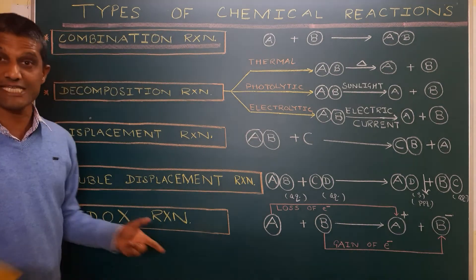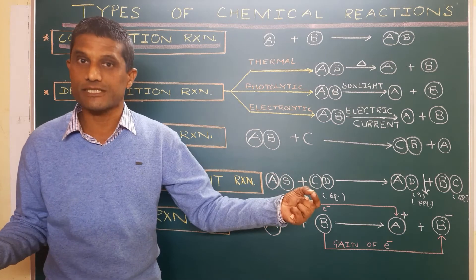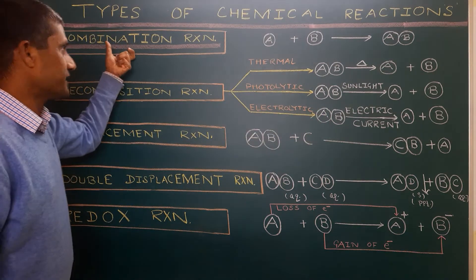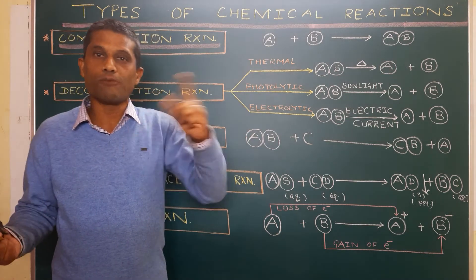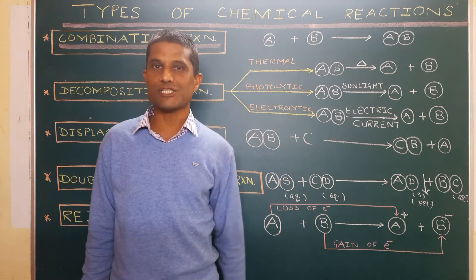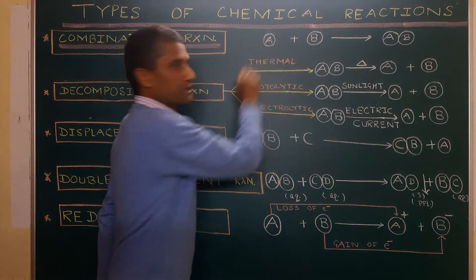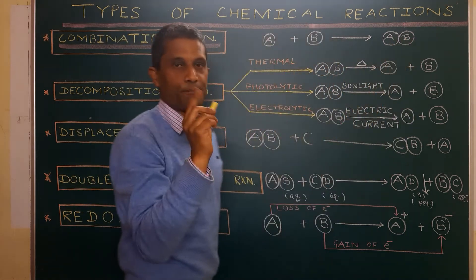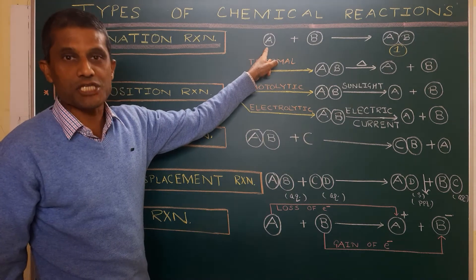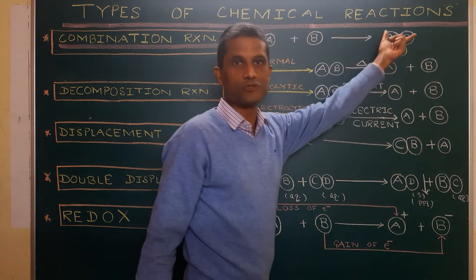First, we are going to take on combination reaction. As the name suggests, combination means to combine. Two or more substances join together, and one product is formed. This reaction states that when two or more simpler substances react together to give a single product, that is called a combination reaction. Here, in this hypothetical reaction, A reacts with B and gives a single product AB — that illustrates combination reaction.